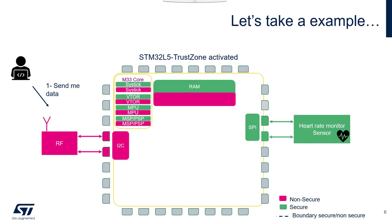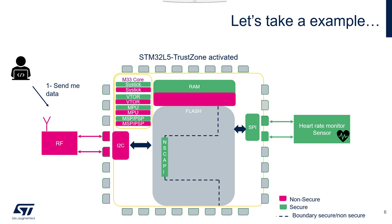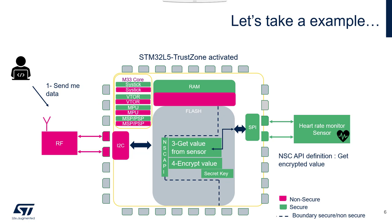So now we will activate TrustZone - we will activate the isolation. What should we put in the secure world and what in the non-secure world? Keep in mind: in the secure world, you have to put what you want to protect. We want to protect the air rate monitor sensor and its value, so the SPI interface and the associated GPIO go in the secure world. In flash, we also split between secure and non-secure. We put the SPI interface handling in the secure world, as well as the encryption capability and the secret key - which is something you want to protect because you don't want anyone to have access to it. We define only one single API for the non-secure world: 'Get Encrypted Value', which simply returns a value from the sensor already encrypted. This means the non-secure world has no access to the secret key or raw sensor value, but can only request an encrypted value.